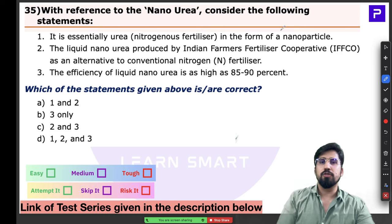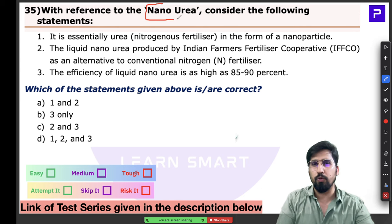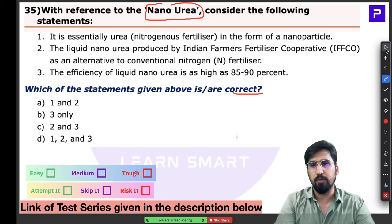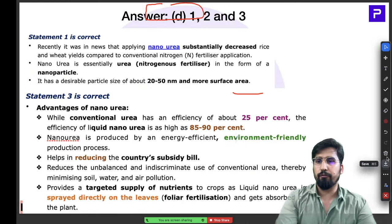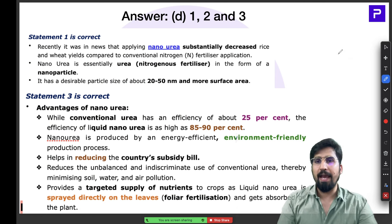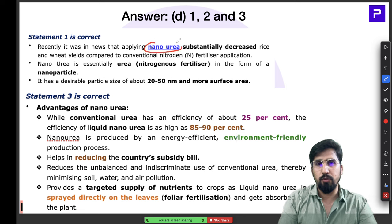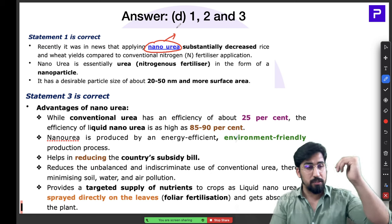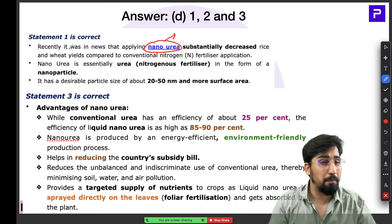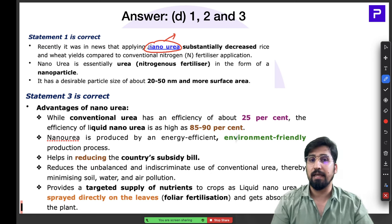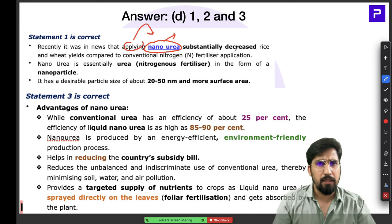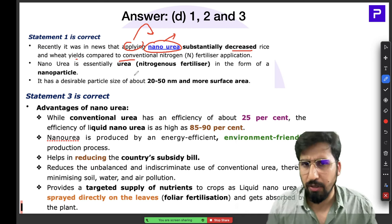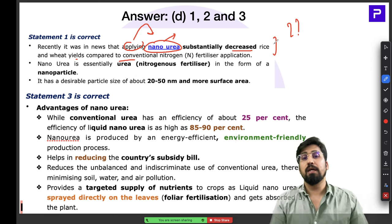Question 35 is about Nano Urea — a very common and famous topic. Nano Urea was recently in the news, but recent reports indicate that applying nano urea actually decreases rice and wheat yields compared to conventional fertilizers. A few important facts about nano urea need to be remembered before examining the statements in this question.